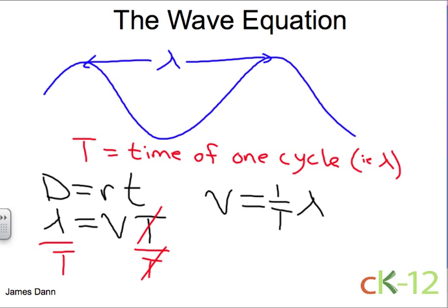What is one over the period? By definition, one over the period is equal to the frequency. Period is the time of one wavelength or one cycle. Frequency is the number of wavelengths or the number of cycles that pass every second.